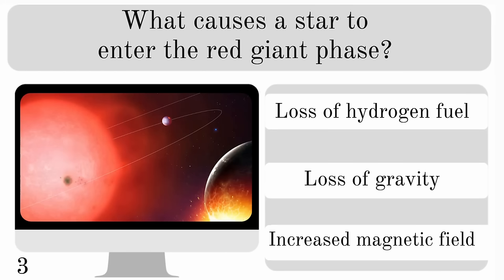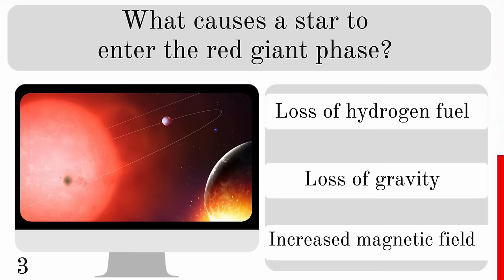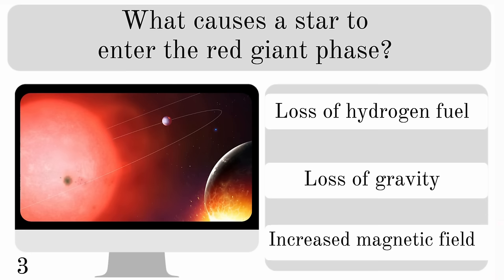What causes a star to enter the Red Giant phase? Is it from the loss of hydrogen fuel, the loss of gravity or an increased magnetic field? And it's from the loss of hydrogen fuel.